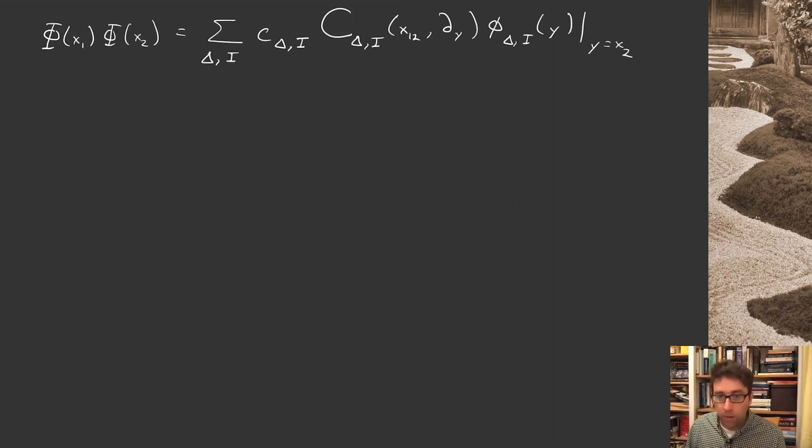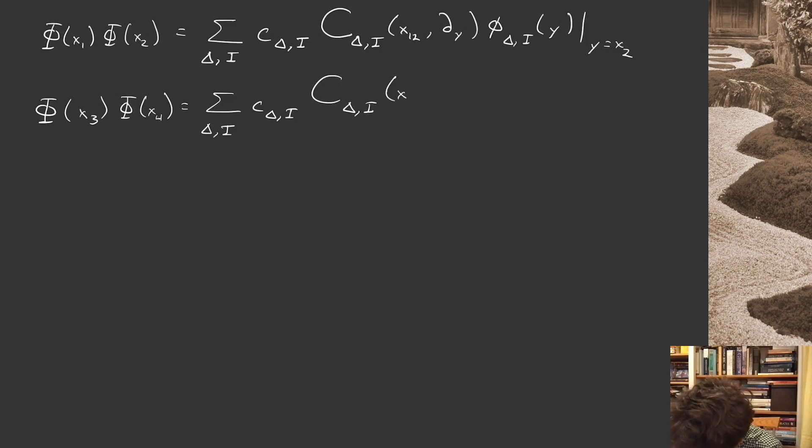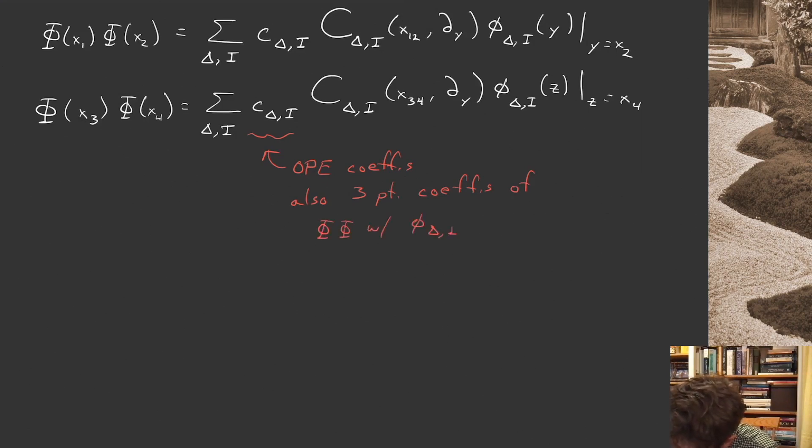Last time we discussed what this capital C x partial function was. Similarly, we can do the same thing for the second two points, x3 and x4. So let's write that out. We have these coefficients, this fancy function of a position and a partial derivative phi delta i at z now, where z is x4. These are my OPE coefficients. They're also the three-point function coefficients of phi, phi with my primary operator phi delta i. So if I have all of that information, I have these operator product expansions explicitly.